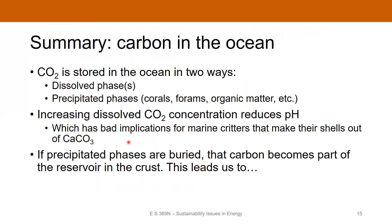To summarize carbon storage in the ocean: we can store it either as dissolved phases or as precipitated phases — carbonate skeletons, organic matter, and so on. If we increase the dissolved CO2 concentration, we will decrease the pH of the water and acidify the ocean, which has bad implications for the organisms that make their shells of calcium carbonate.